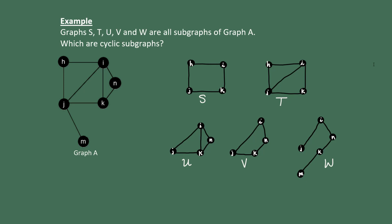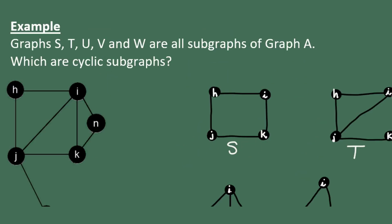Let's start with graph S. So notice that graph S has one, two, three, four vertices, and it also has one, two, three, four edges. Also, each of its vertices is connected to two edges, so each vertex has degree two. You can also tell by inspection. All cycles begin and end at the same vertex, and they only visit each vertex once. They go in a kind of circular pattern, but sometimes it's harder to tell. So graph S is, in fact, a cyclic subgraph.